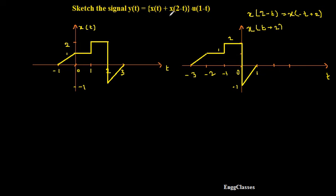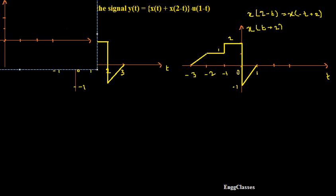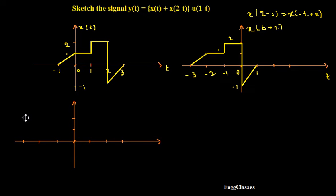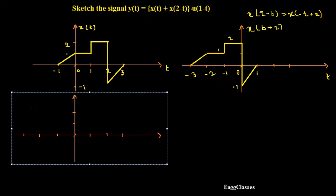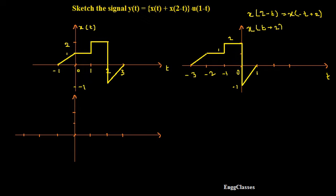Now what I want is X of 2 minus t. I got the shifted signal, so I just have to take the reflection so that I get the exact signal. Let me get the X axis and Y axis again and draw this exactly below so that I can add these two signals very easily. Whenever I take the reflection, I take it along the vertical axis. Whatever time limits are on the negative axis become positive, and positive numbers become negative. So 0 remains as it is, plus 1 becomes minus 1, and minus 1, minus 2, minus 3 become 1, 2, and 3 — the positive limits.